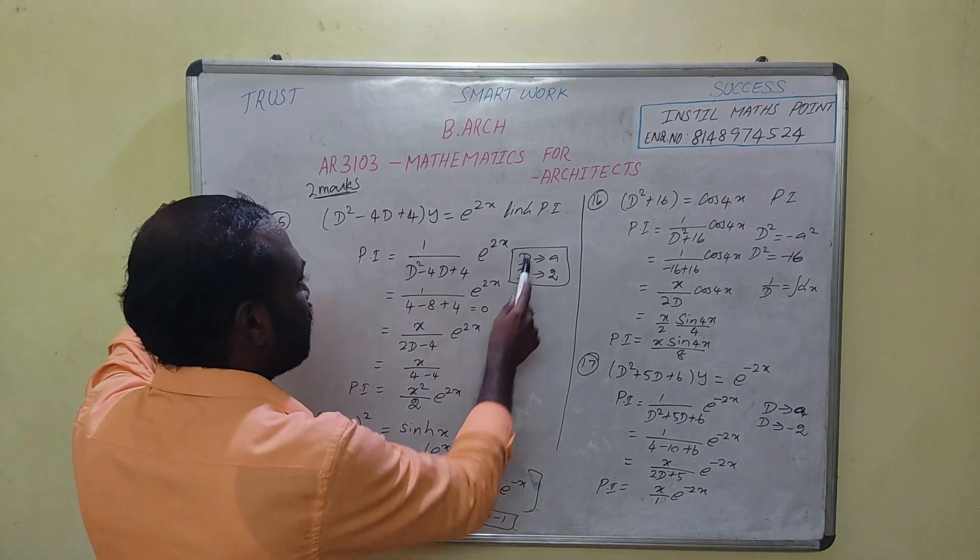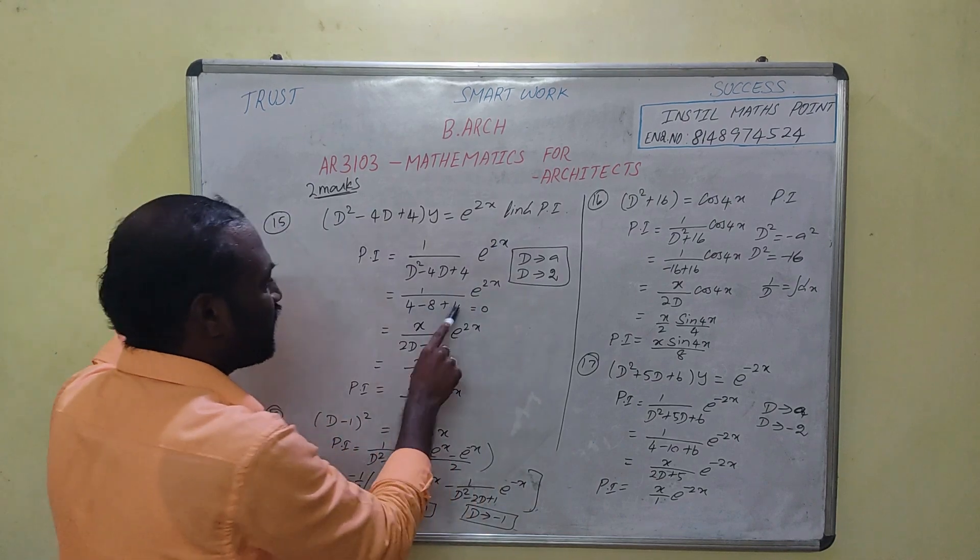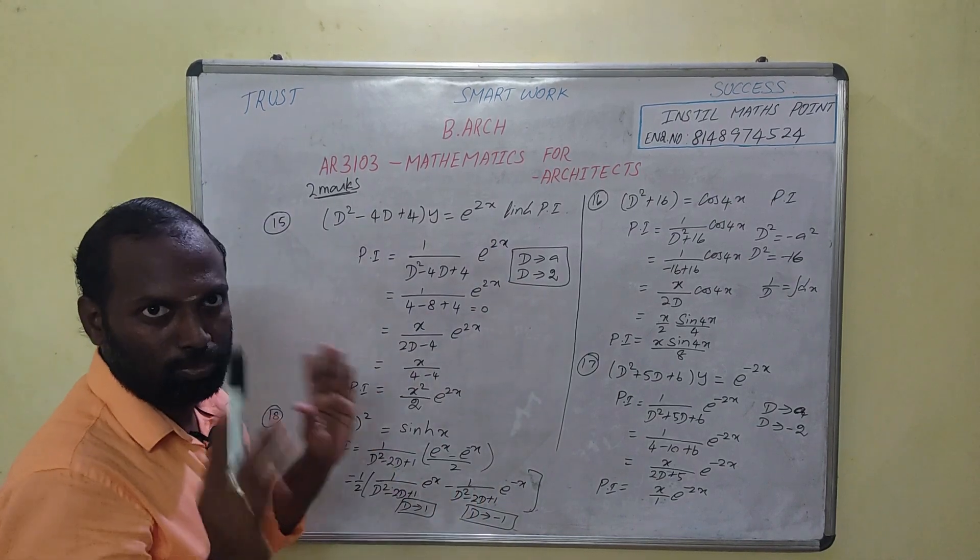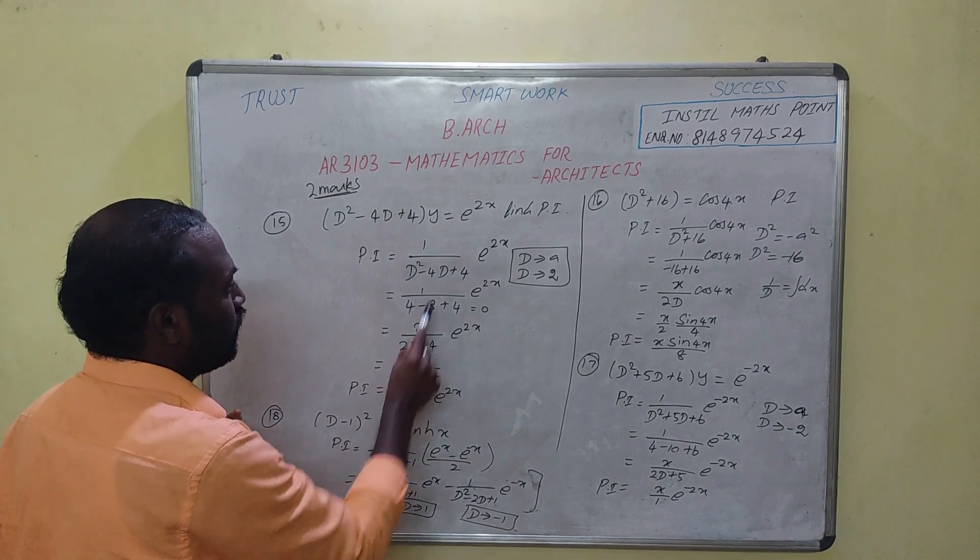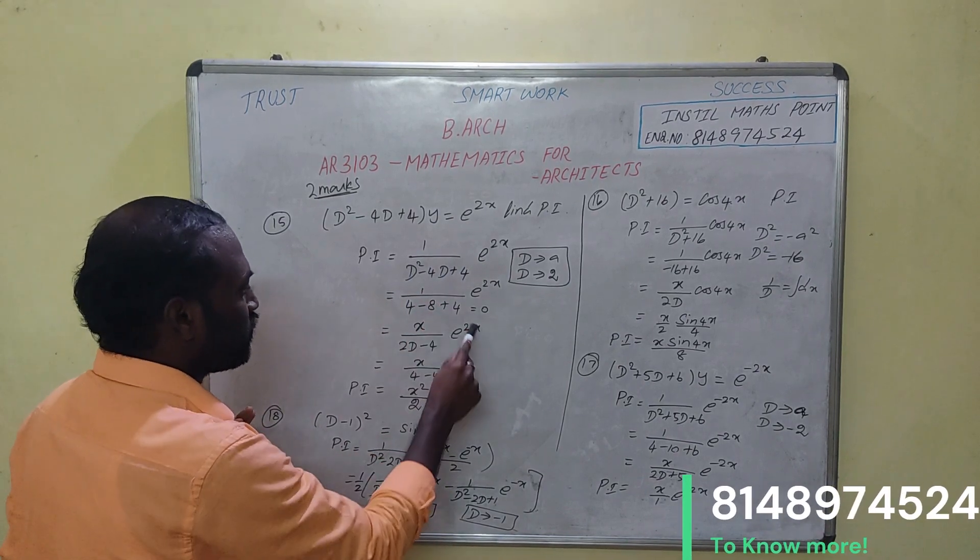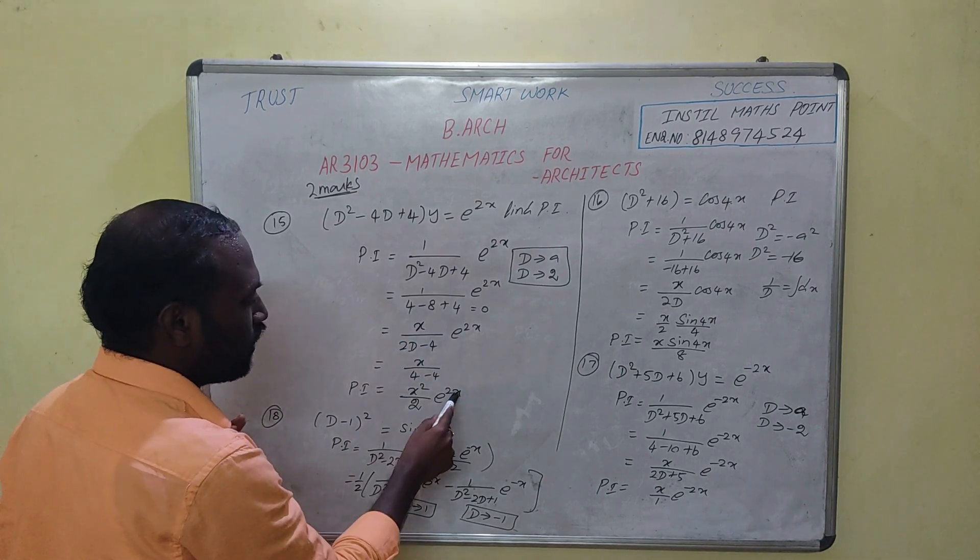In this model, we can apply d to a. We can apply d to a, 2. If you apply 2, it is 0. If you apply 0, there is a problem. We can differentiate x on the top. 2d-4 is 0. You can differentiate x on the top. 2 is 0, then e, 2x.